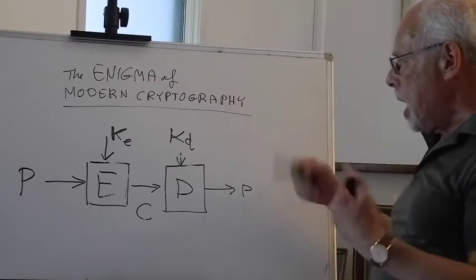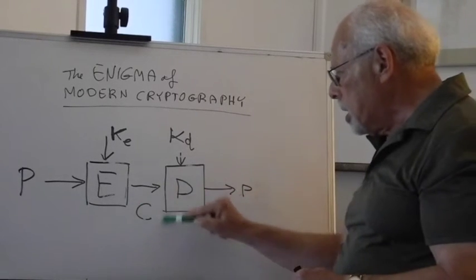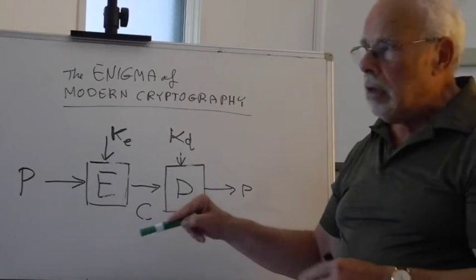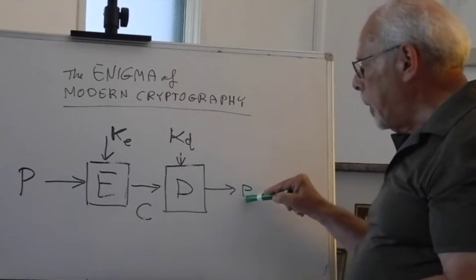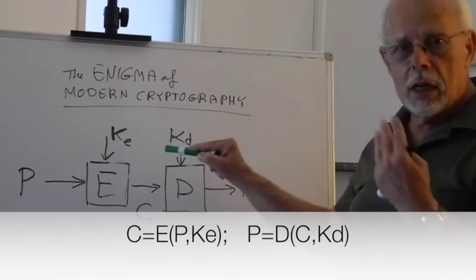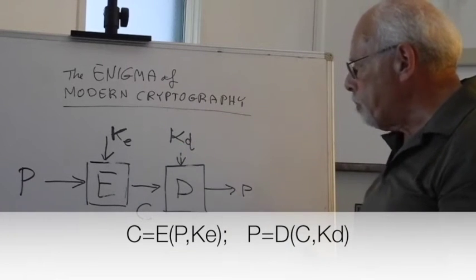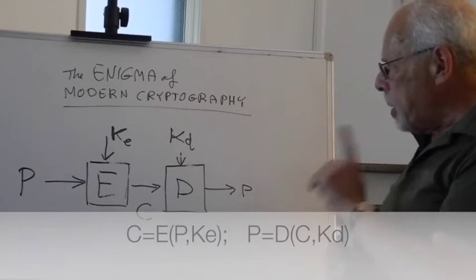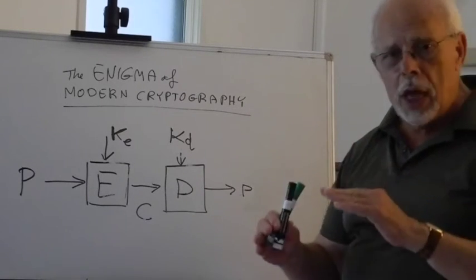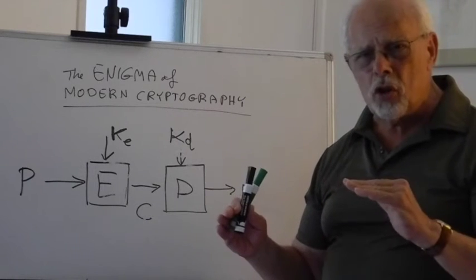The hacker is left with the ciphertext. Hopefully, he cannot produce the plaintext because he doesn't have the decryption key. That was the configuration, but there was something else that was assumed and hasn't been challenged for hundreds of years of cryptography.